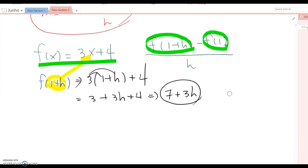Now f(1). Same thing, you are plugging 1 into x here. Then 3 times 1 plus 4, which is 7.